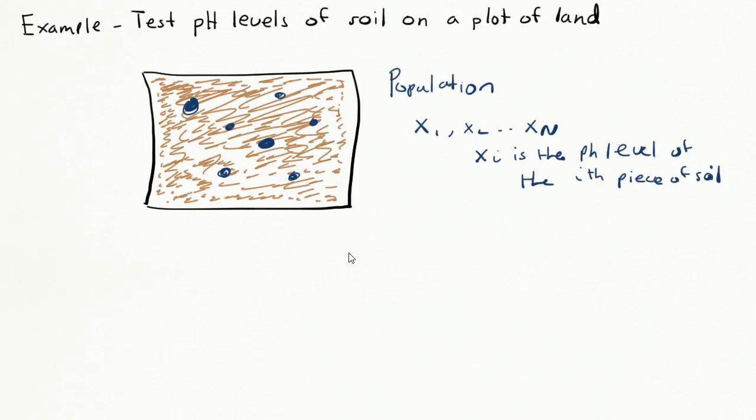So, what is the sample? The sample would be X1, X2, through X lowercase n, where Xi is the pH level of the ith soil sample. And the lowercase n is the number of soil samples that were obtained from the plot of land.